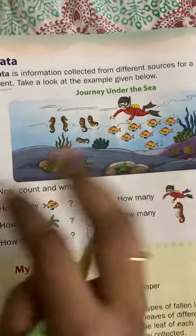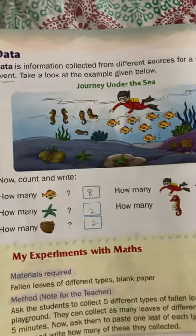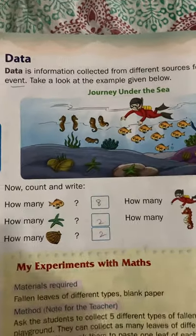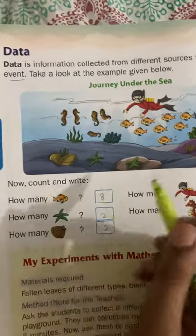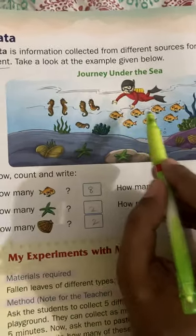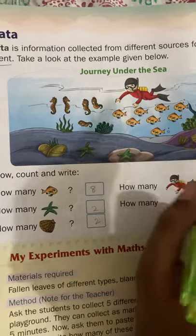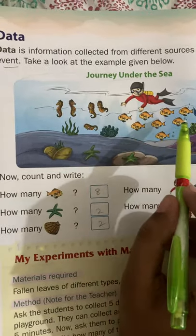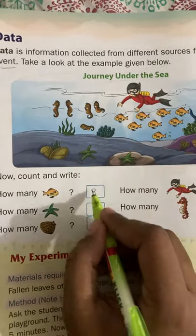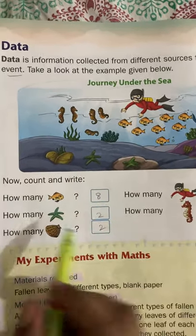This is the journey under the sea. We will count what all will be in the sea. Fishes: 1, 2, 3, 4, 5, 6, 7, 8. There are 8 fishes.